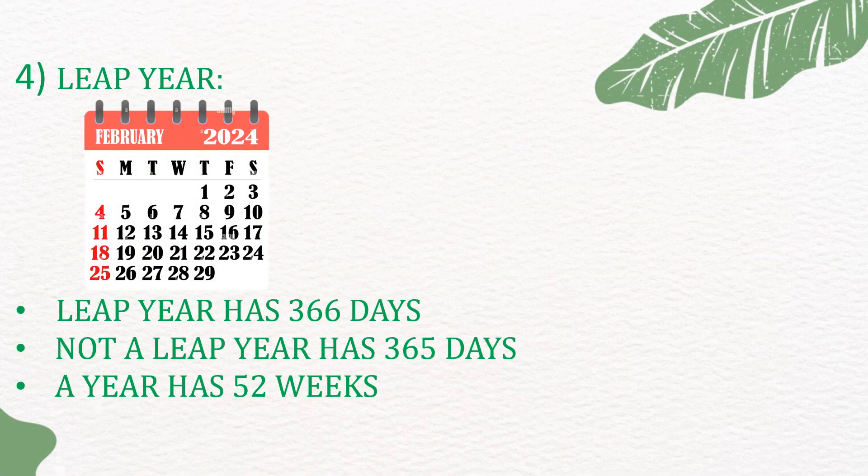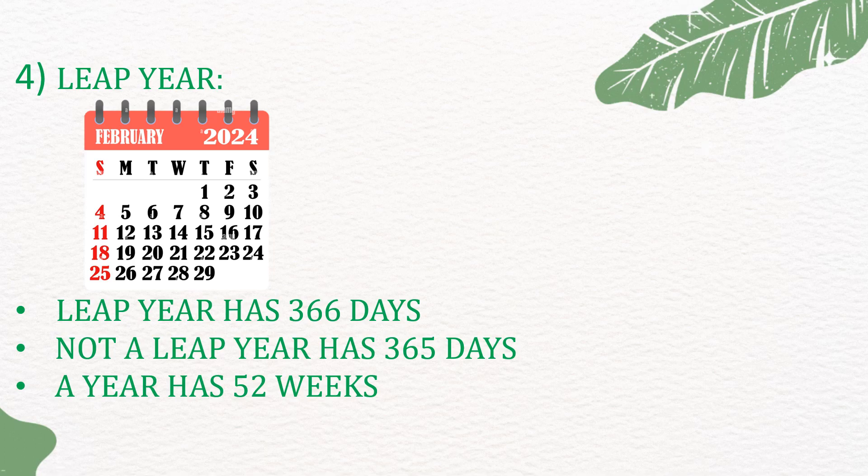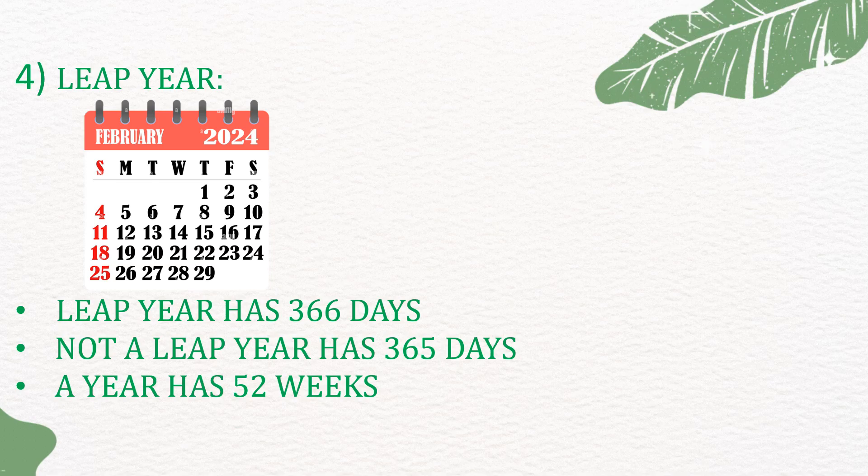4. Leap Year. A leap year has 366 days and a normal year has 365 days. A year has 52 weeks.